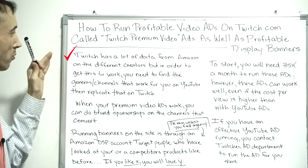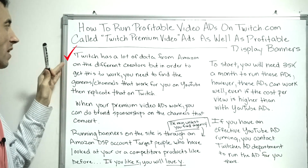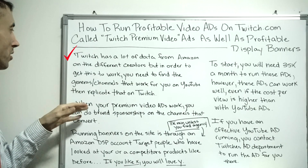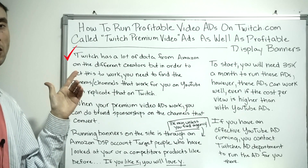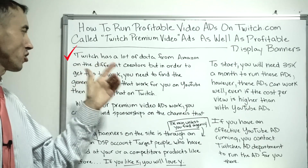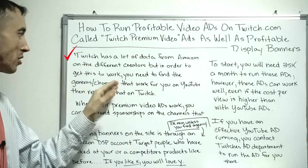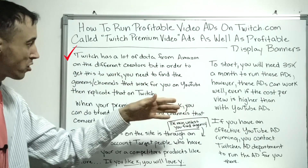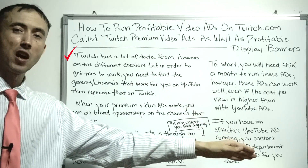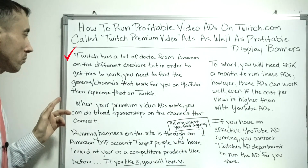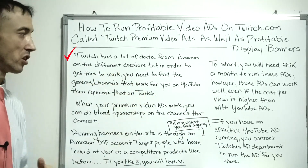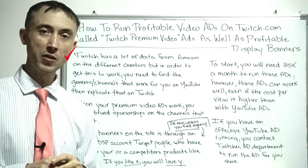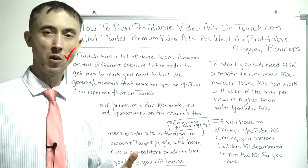Twitch has a lot of data on different things that work, but you need to find the genres and channels that work on Twitch to make money with your video ads. If you start out on YouTube, you already know the type of channels and genres that work, so you just replicate that on Twitch.